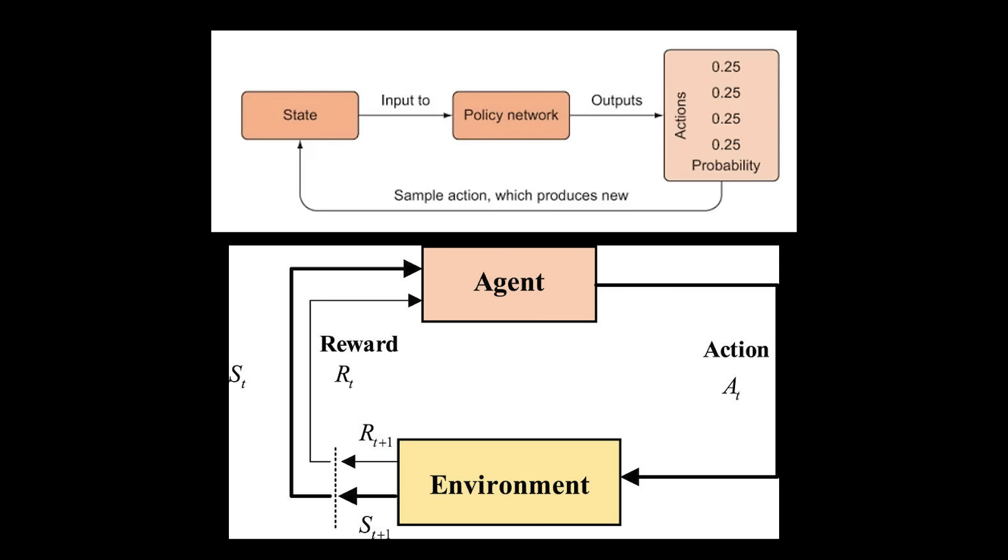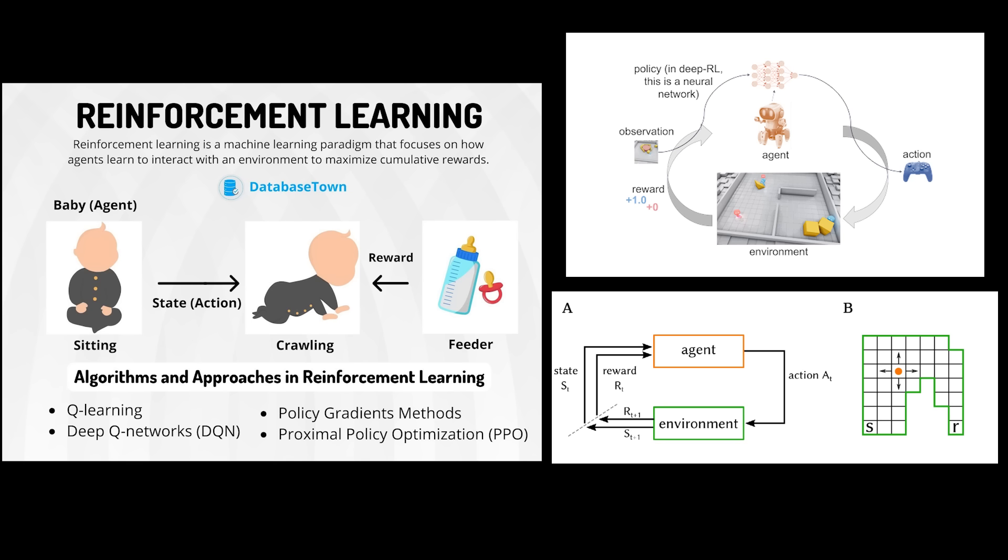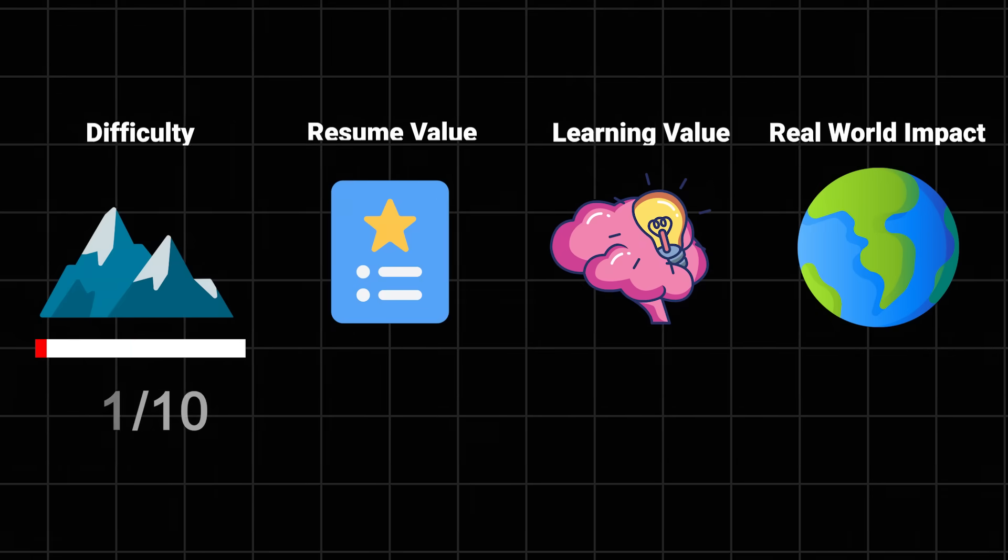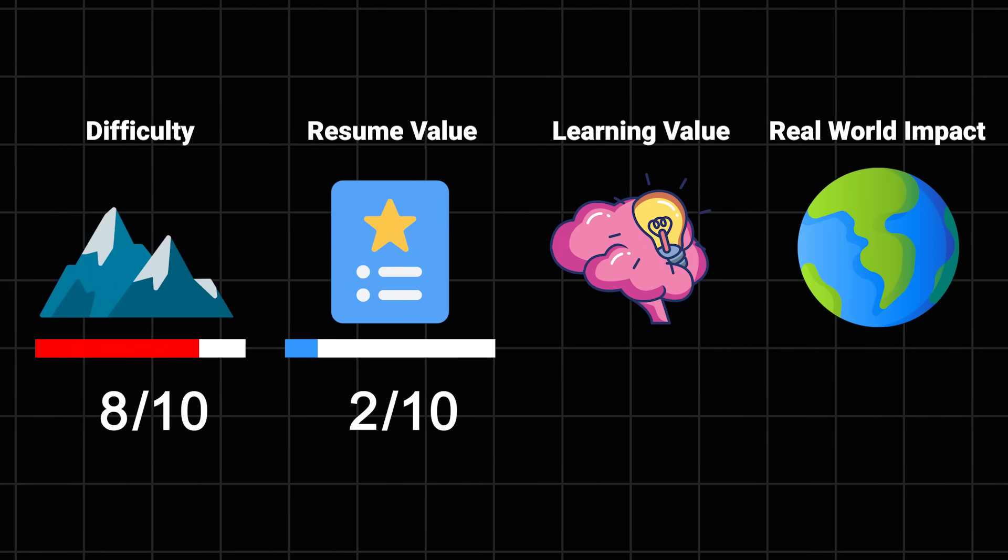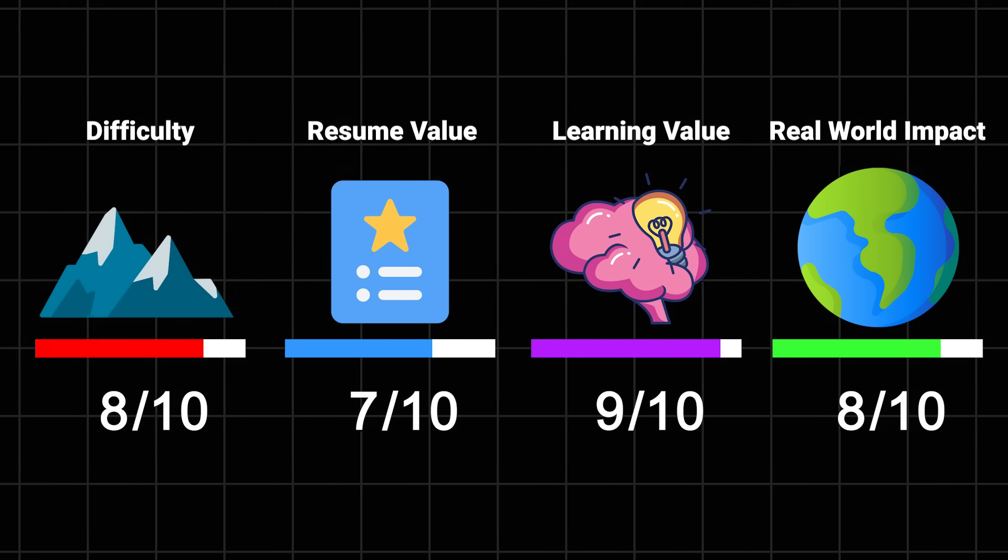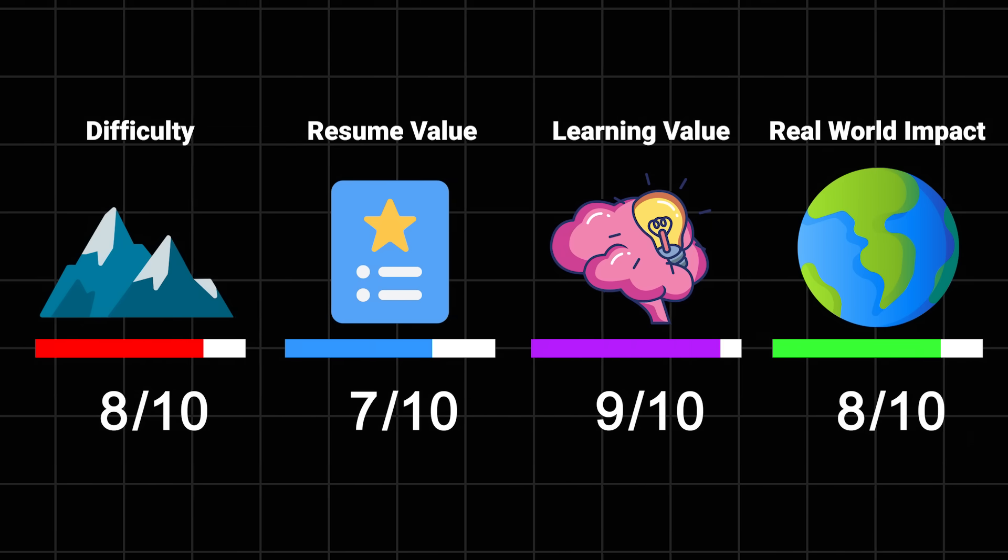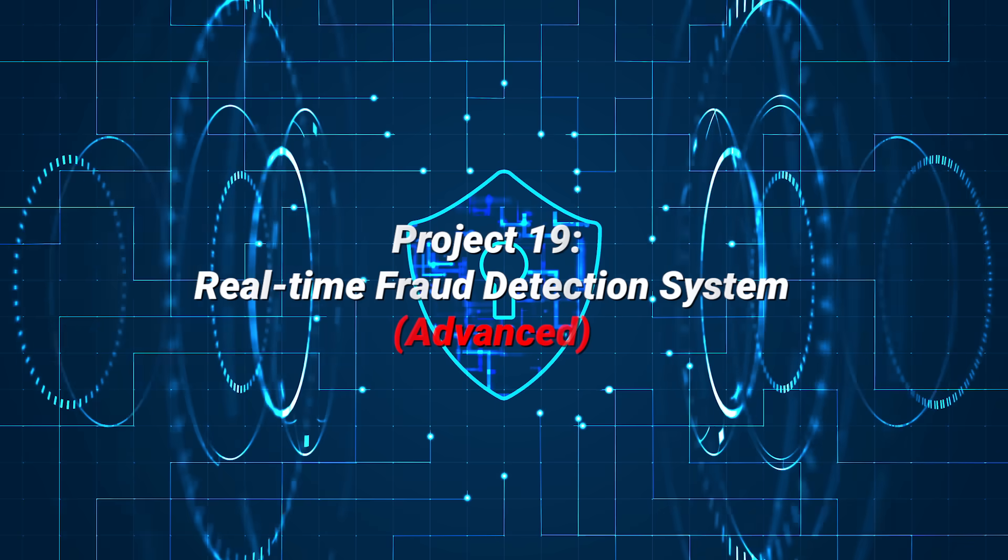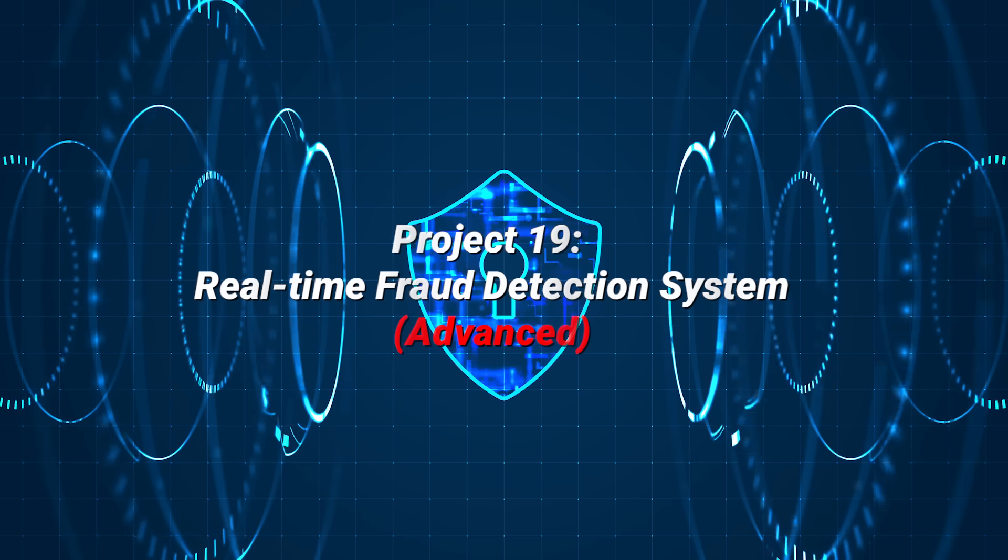Reinforcement learning game. Time to build an AI that can learn to play games. Start with something simple like Pong, then work your way up to more complex games. You'll learn about reward systems, policy gradients, and why your AI keeps finding weird exploits in your game rules. Difficulty: 8 out of 10. Resume value: 7 out of 10. Learning value: 9 out of 10. And impact: 8 out of 10. Plus, it's just really cool to watch your AI learn.